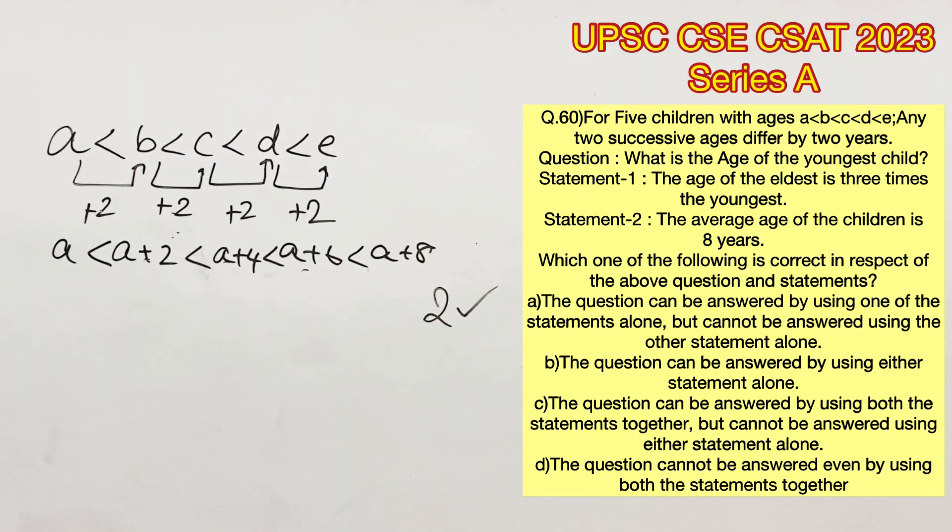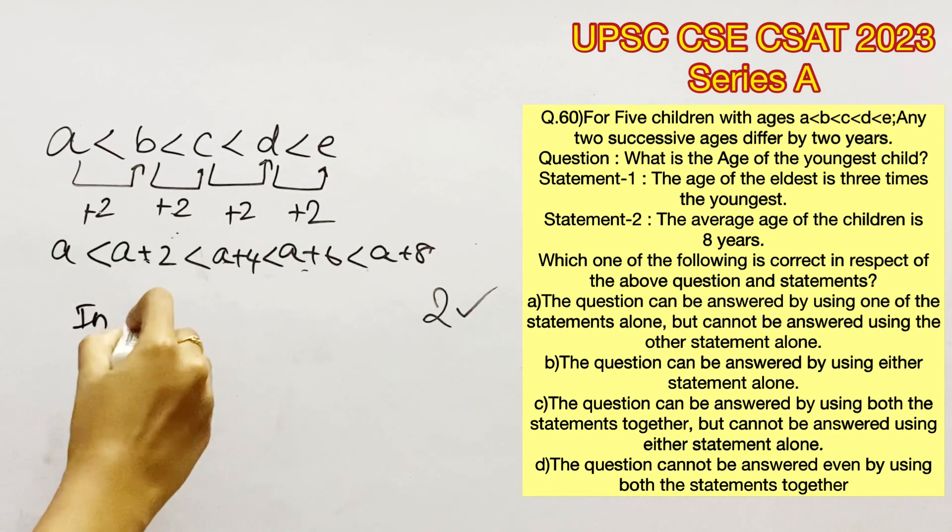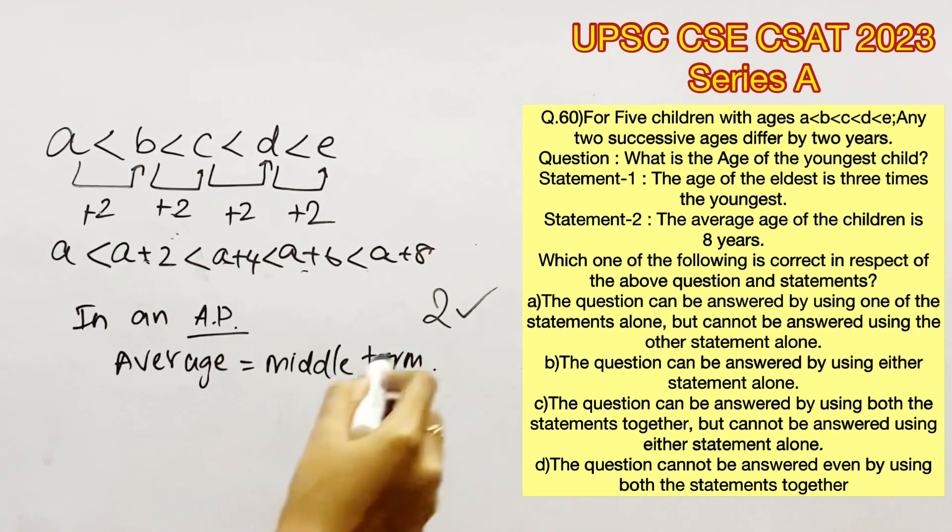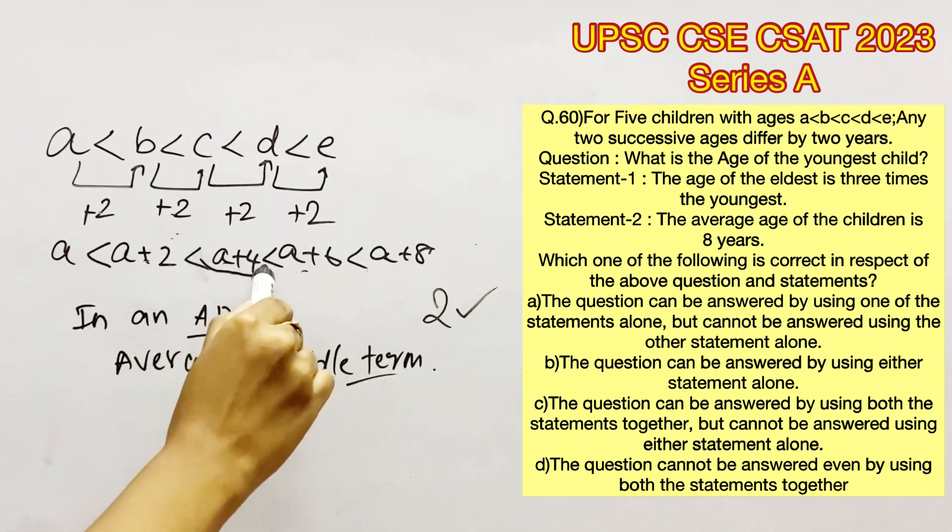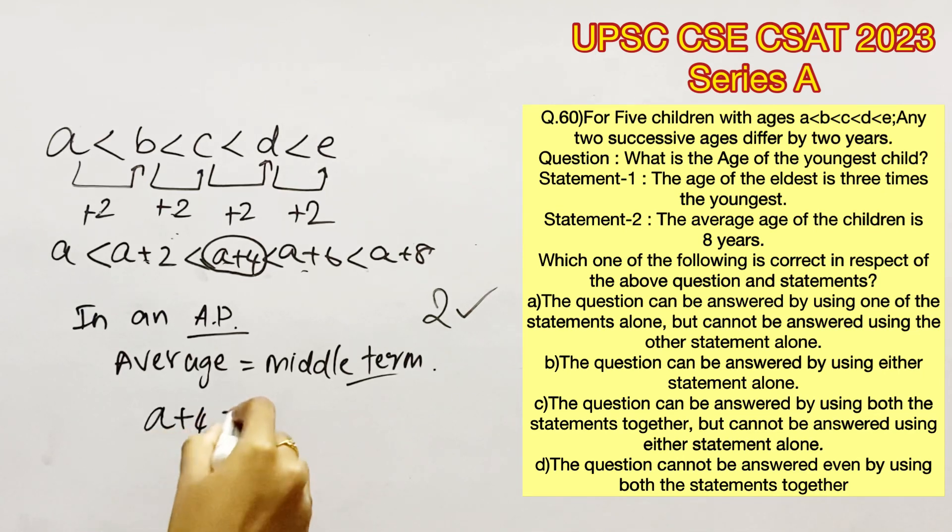It's important to notice that when you consider an arithmetic progression, the average will always be the middle term. You need to save time while solving aptitude. So you can take this directly to solve this: A plus 4 is 8, therefore A is equal to 4.